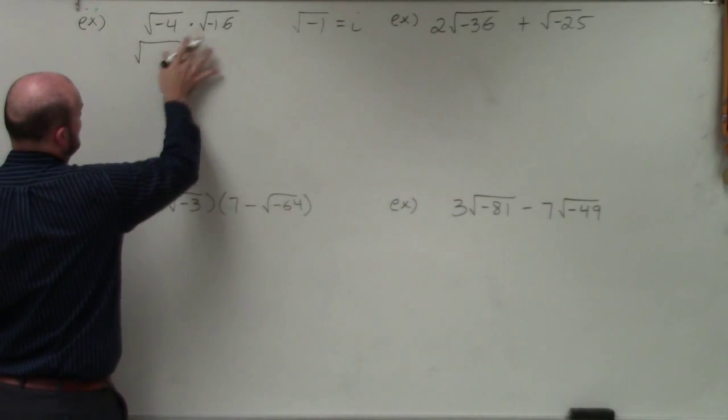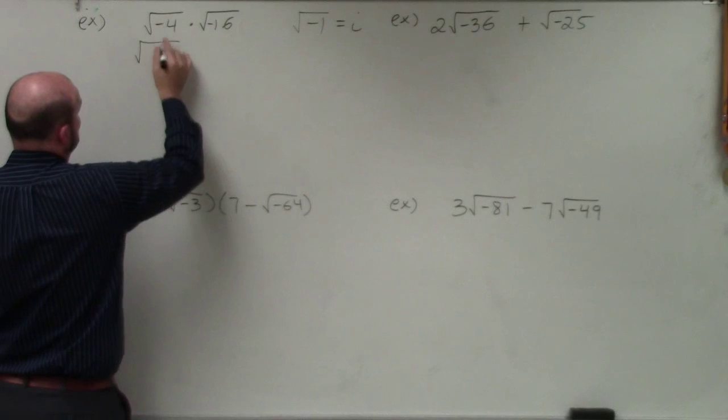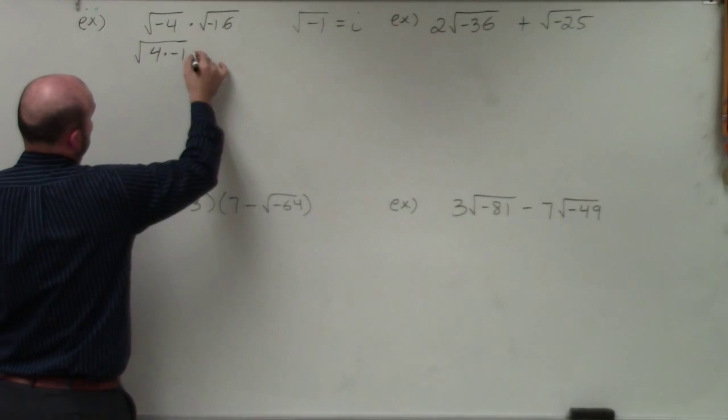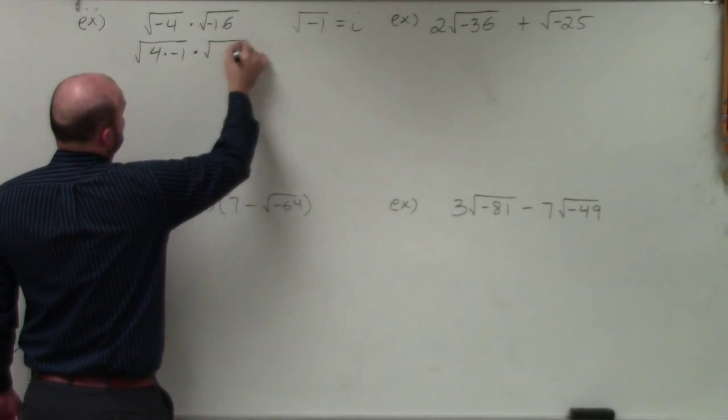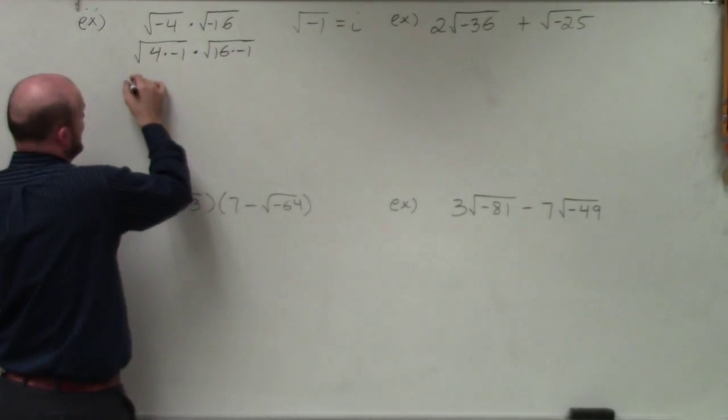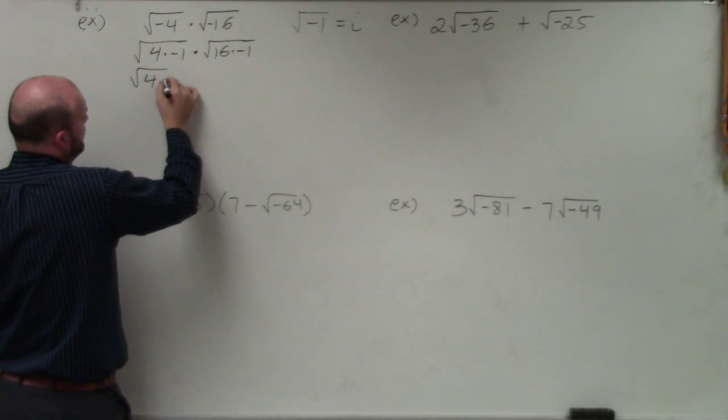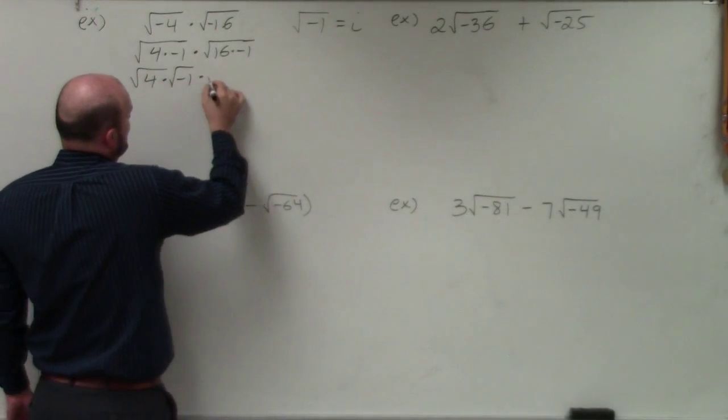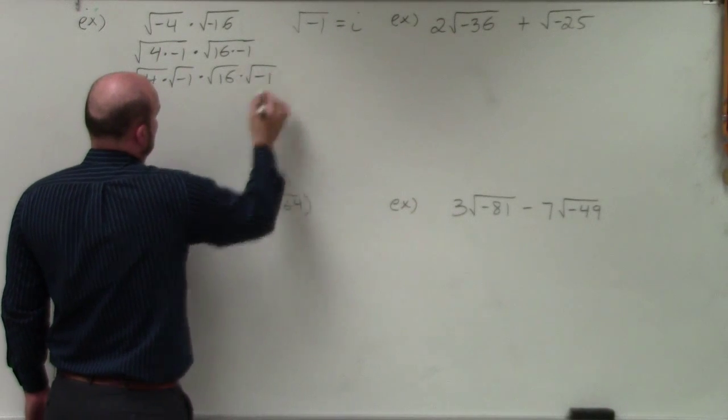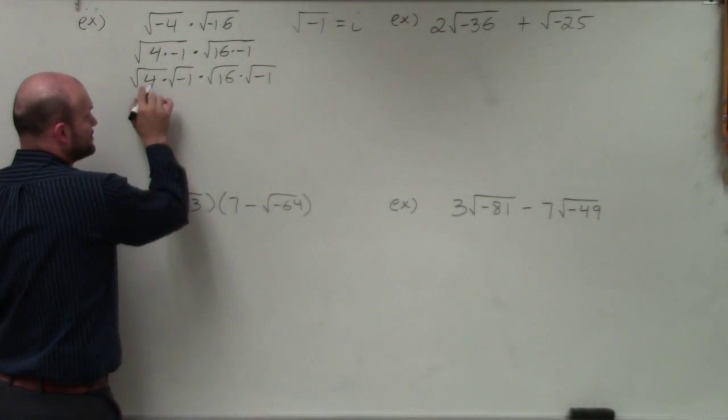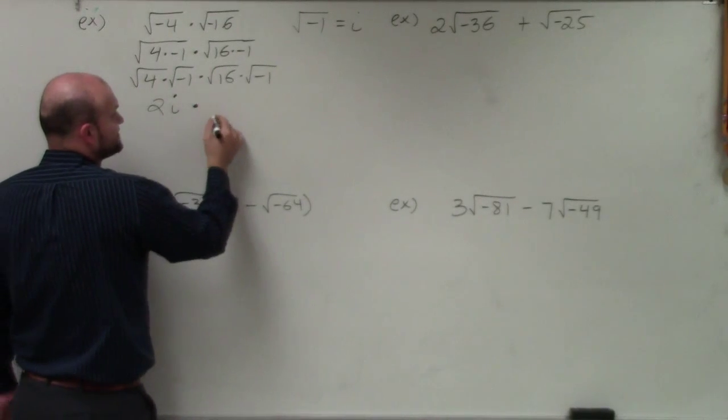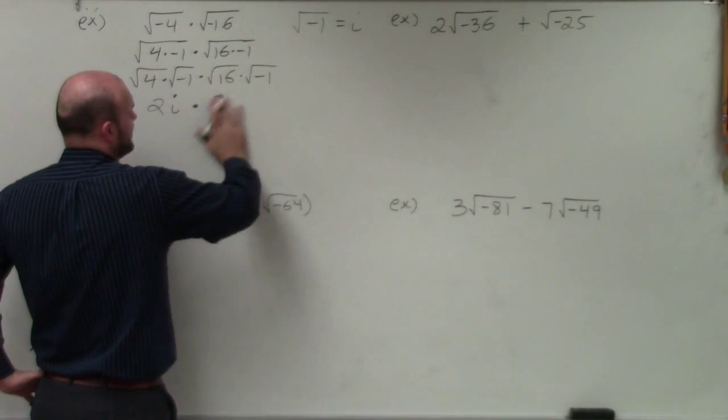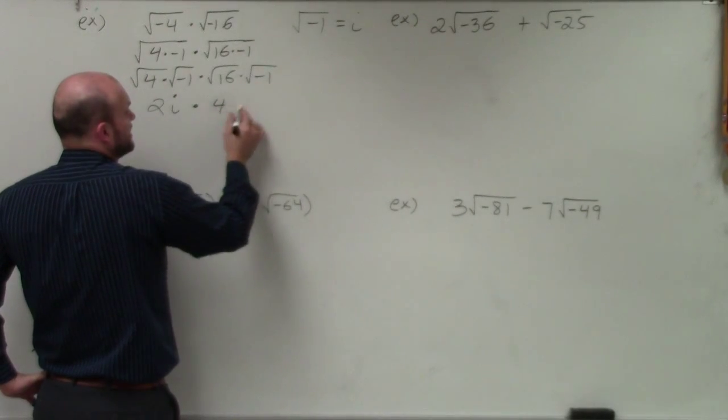Any time I have the square root of a negative number, I am going to break it apart into that number times negative 1. I can break that up further into the square root of 4 times the square root of negative 1, times the square root of 16 times the square root of negative 1. Therefore, I now have the square root of 4, which is 2, times the square root of negative 1, which is i, times the square root of 16, which is 4, times the square root of negative 1, which is i.